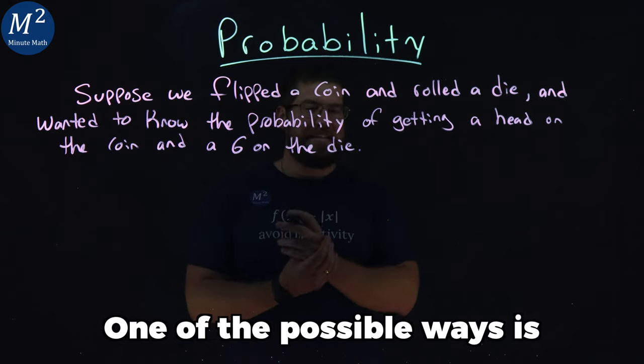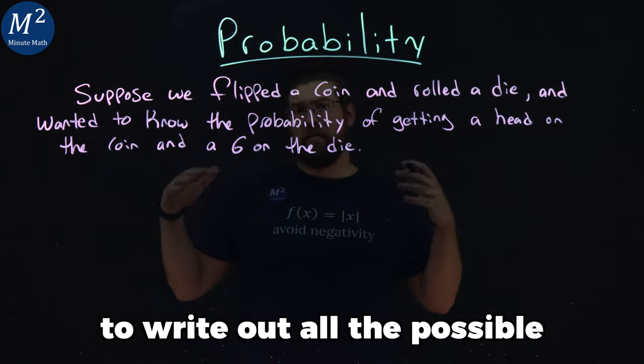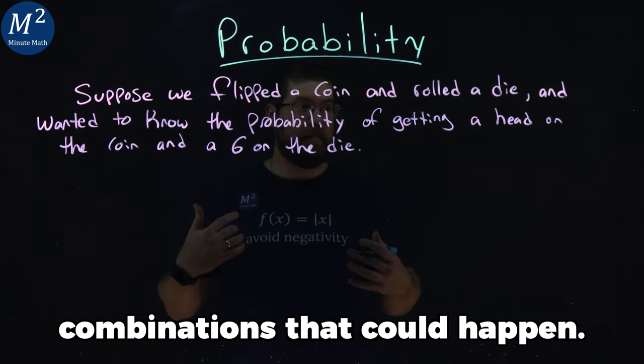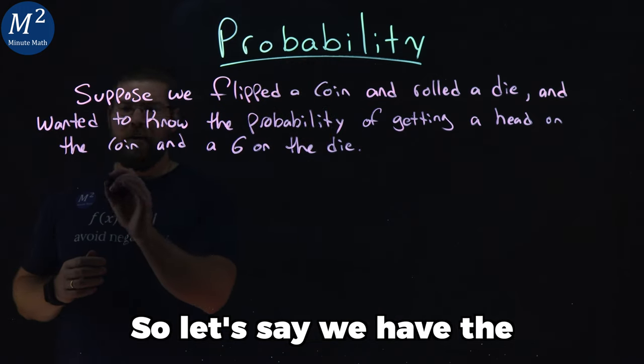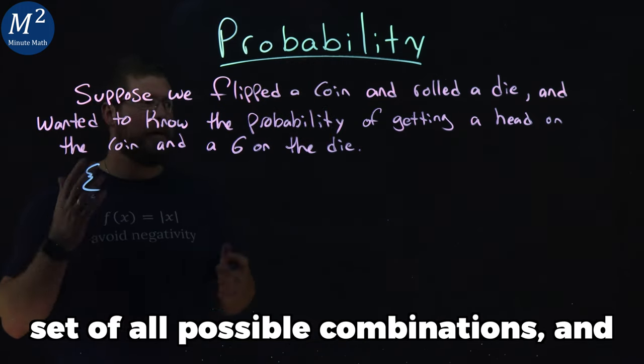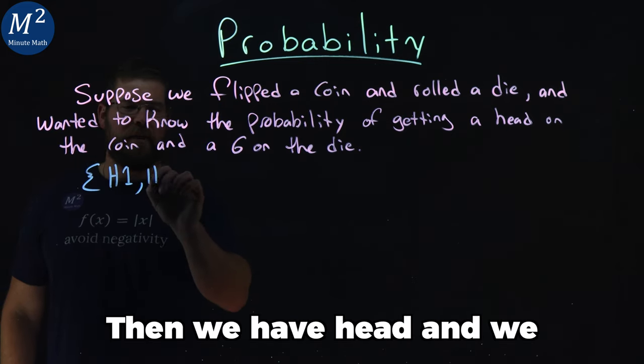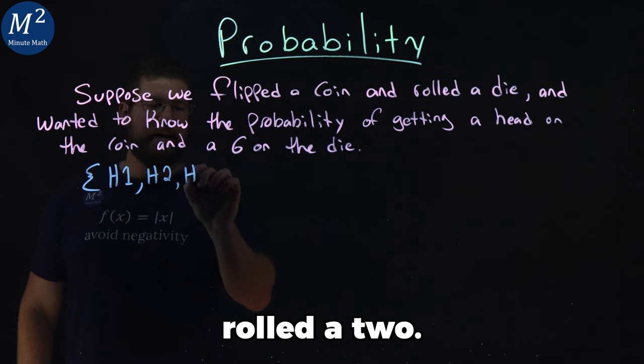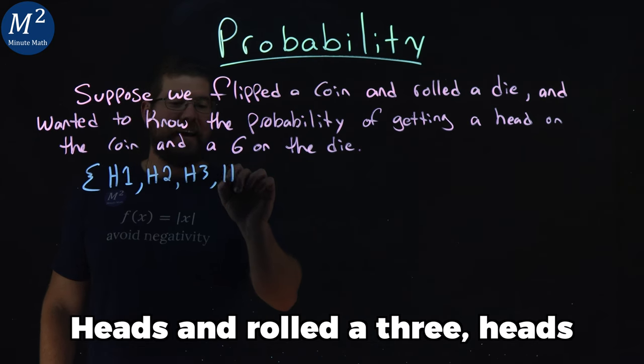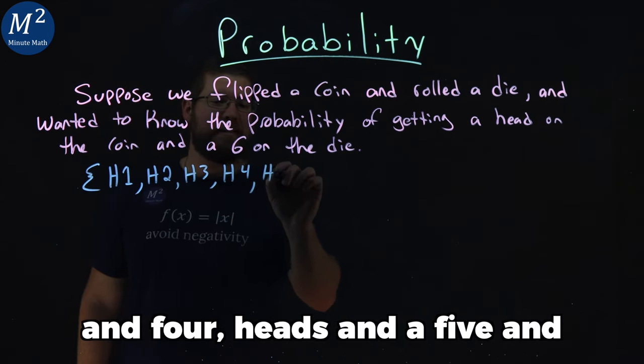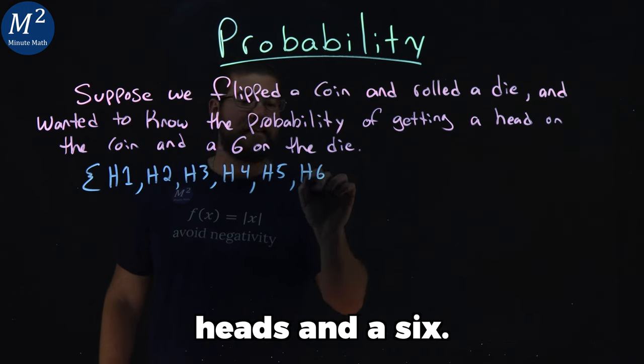One of the possible ways is to write out all the possible combinations that could happen. So we have the set of all possible combinations: head and a one, head and a two, heads and a three, heads and four, heads and a five, and heads and a six.